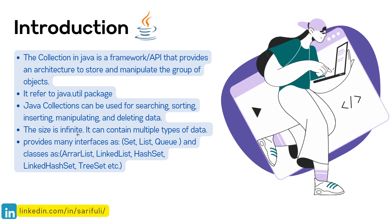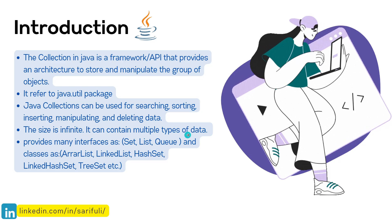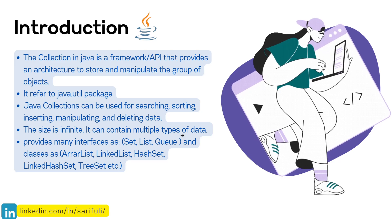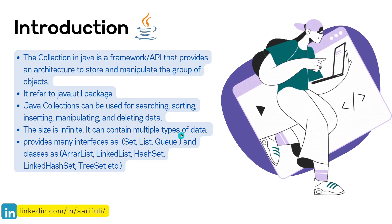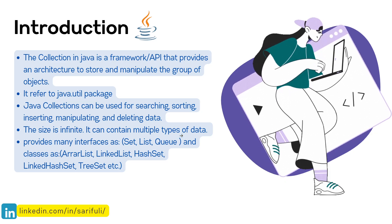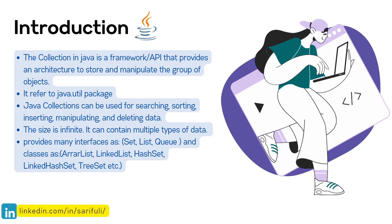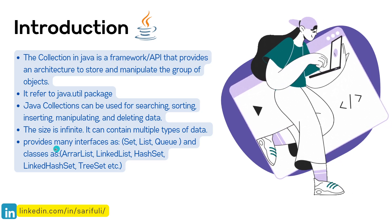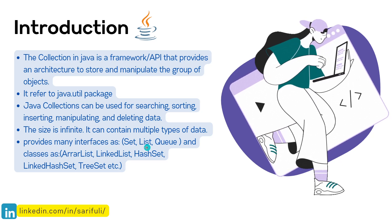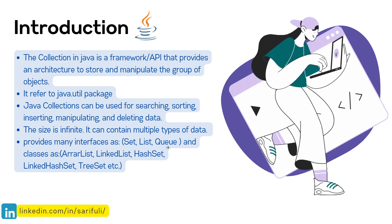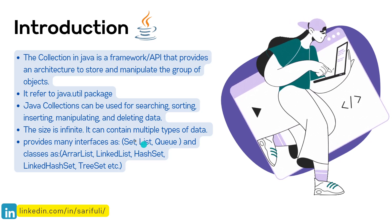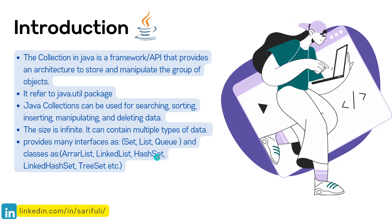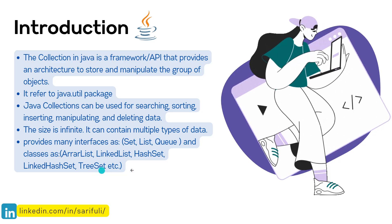Java Collections can be used for searching, sorting, inserting, deleting, or manipulating your data. The size is infinite — the framework size is infinite. It can contain multiple types of data, so it's not fixed to one type; you can store and manipulate different types of data like String, Integer, Boolean, and so on. It provides many interfaces like Set, List, Queue, and also implementing classes like ArrayList, LinkedList, HashSet, LinkedHashSet, TreeSet, and so on.